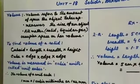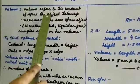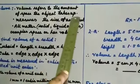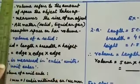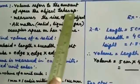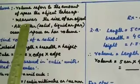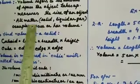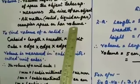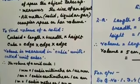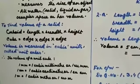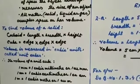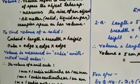So, what is volume? Volume refers to the amount of space an object takes up. It measures the size of an object. All matter — solid, liquid, or gas — occupies space, or has volume. So that means any object that takes up space has volume.